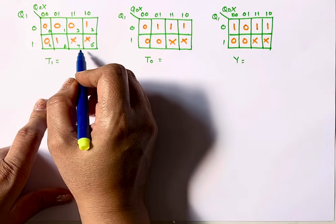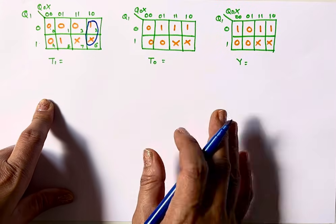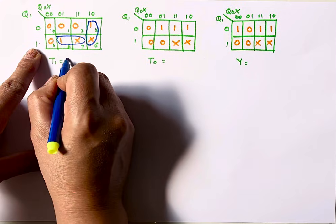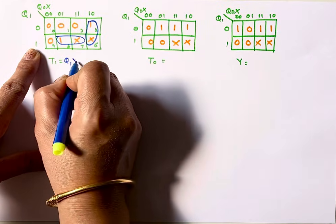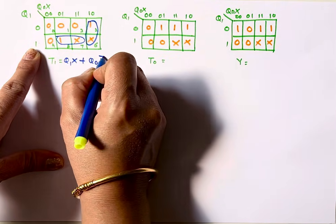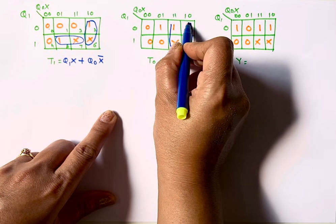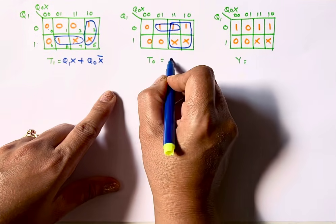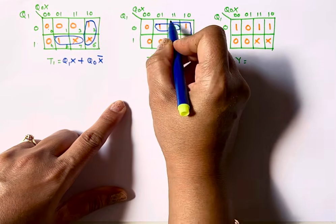While grouping in a K-map it is important to group all 1s. For T1 I have two 1s so I will make one pair. You can make groups of adjacent 1s or overlapping 1s. For T1, the first pair has Q1 common and X is 1 in both cells, giving term Q1·X. The second vertical pair gives Q0·X̄ — Q0 is common and X=0 so X̄. So the equation for T1 is Q1·X + Q0·X̄.